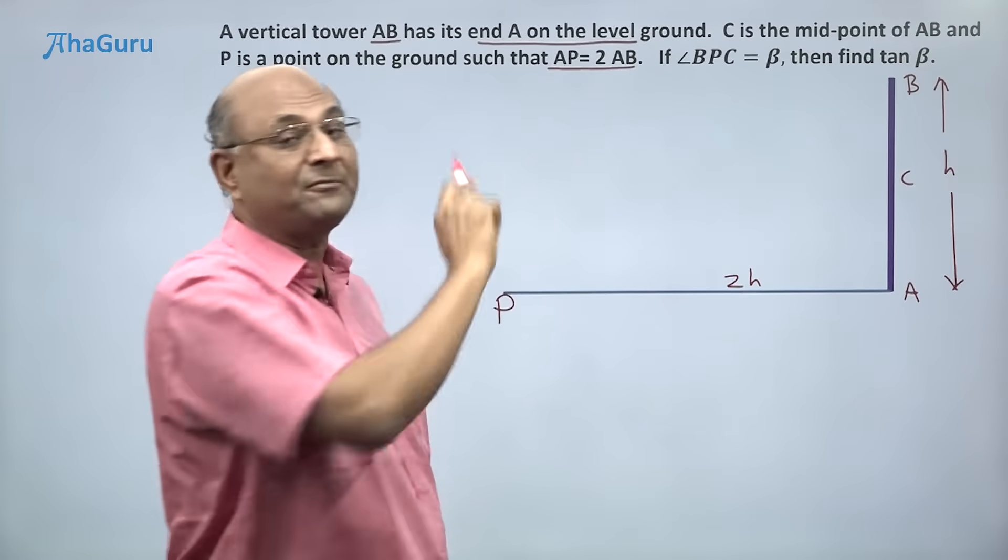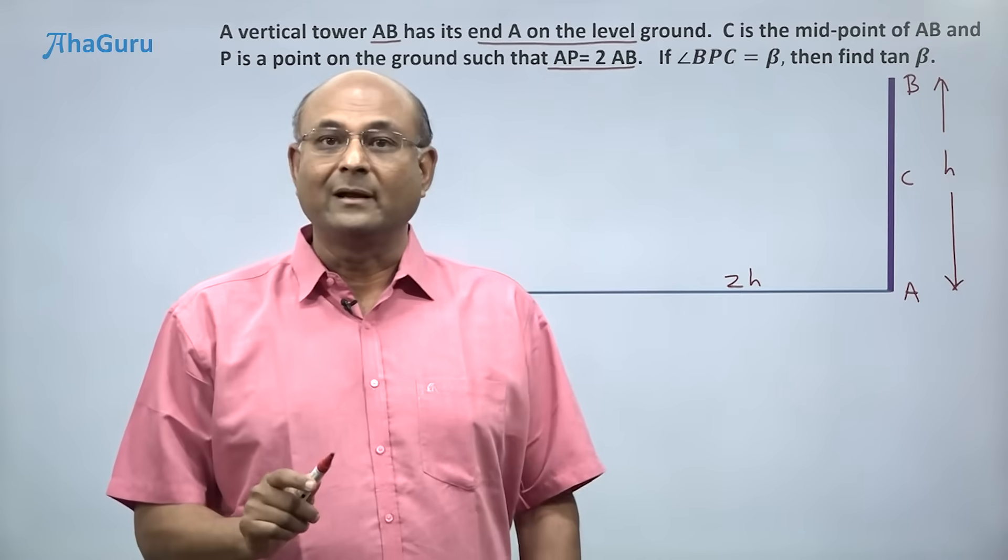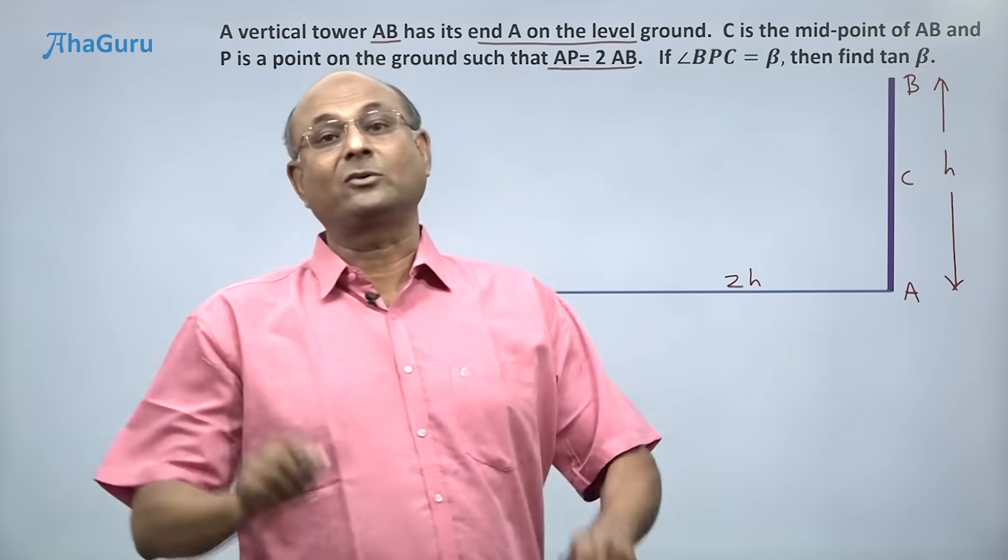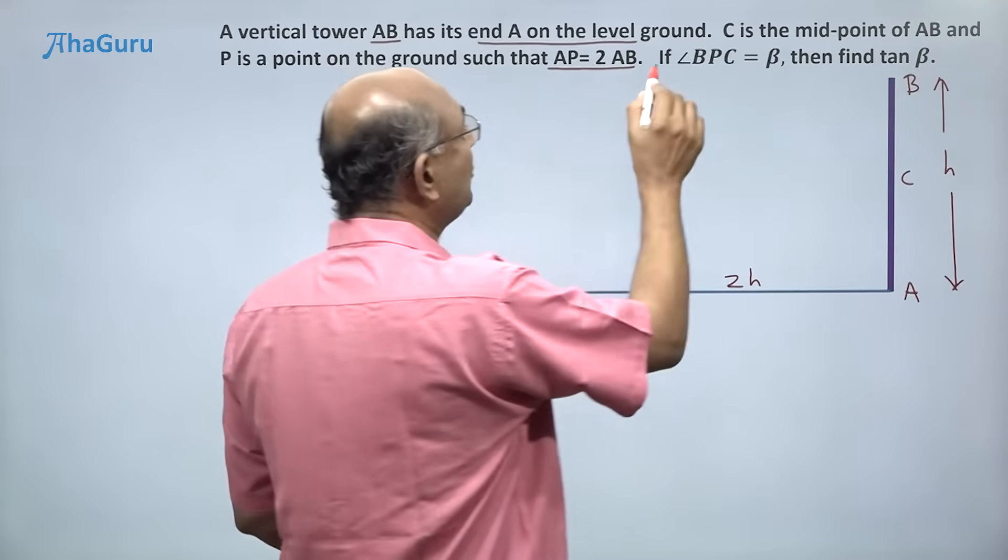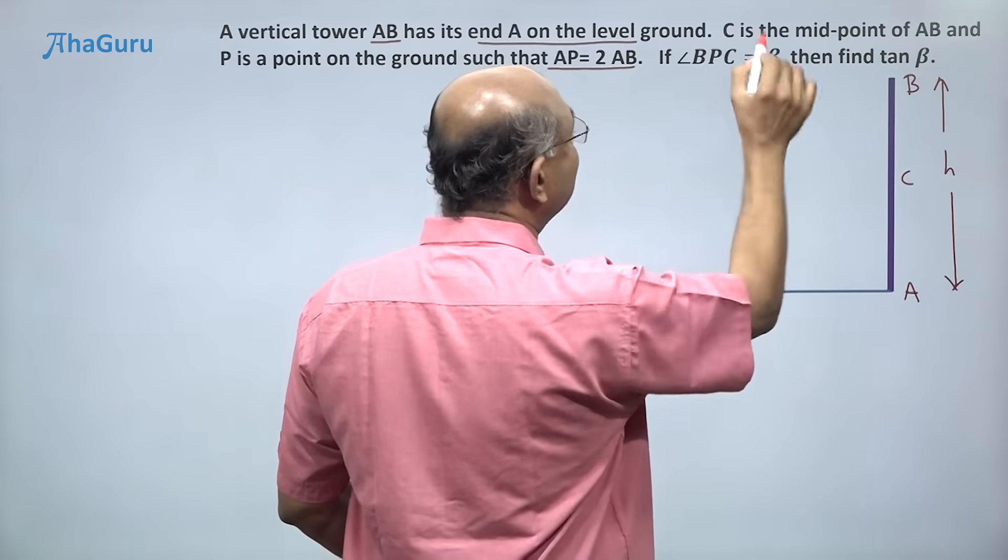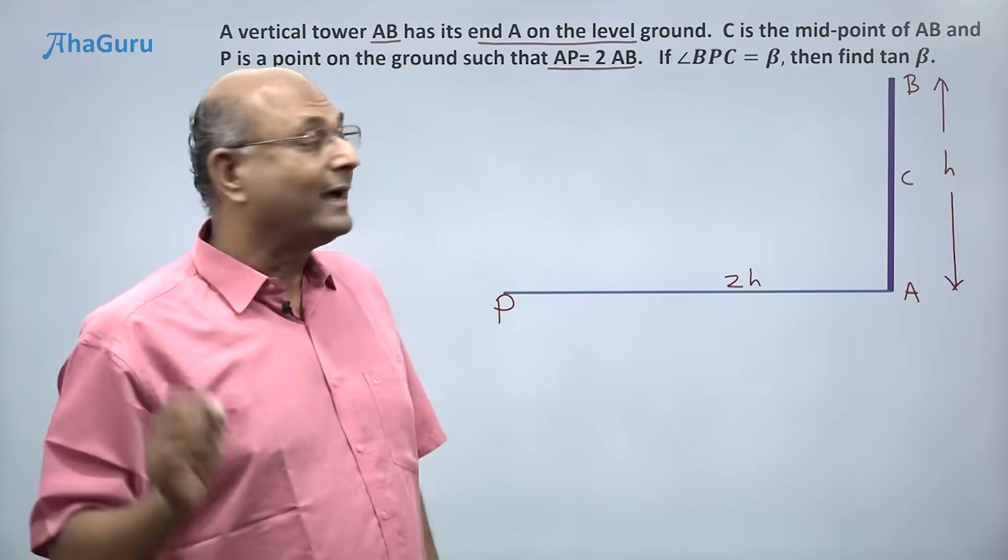So now I have taken all the information from the question, drawn the diagram, and marked all the information on the diagram. This is the first step. Now we have been told that angle BPC is beta and we want to find tan beta.